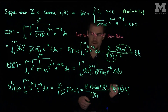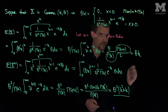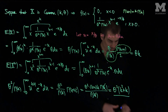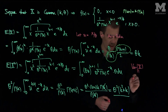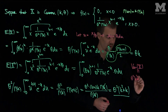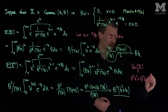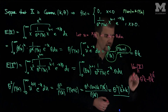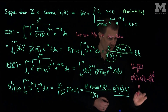Taking this second moment and subtracting the square of the mean, the variance of x equals theta squared*(k²+k) minus theta squared*k squared, which simplifies to theta squared*k squared canceling out, giving the variance of a gamma distribution with parameters k and theta as theta squared times k.